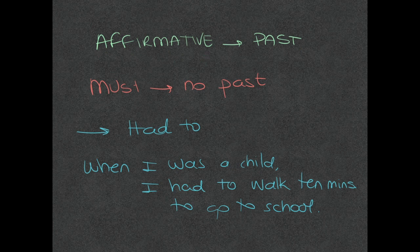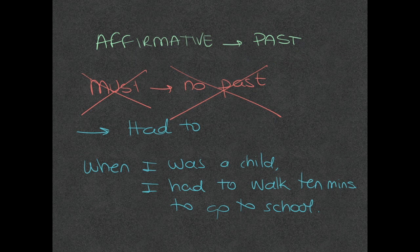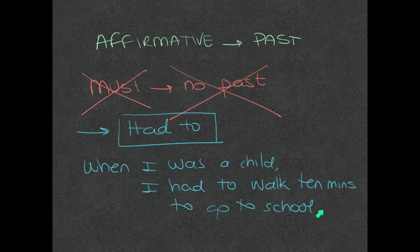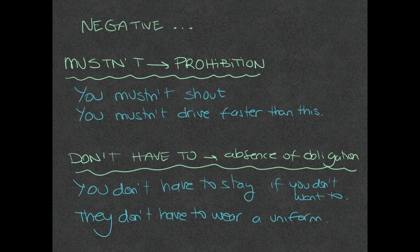The thing is that when you mean to talk about an obligation that existed in the past, the modal verb 'must' has no past tense. So you can't use 'must' to express an obligation in the past. There is no other alternative — you have to use 'had to'. For example: 'When I was a child, I had to walk ten minutes to go to school.' This is the only option you've got.